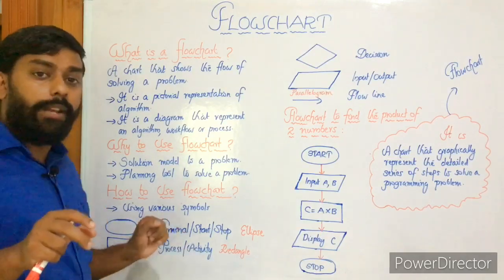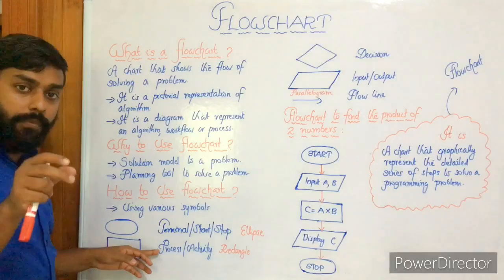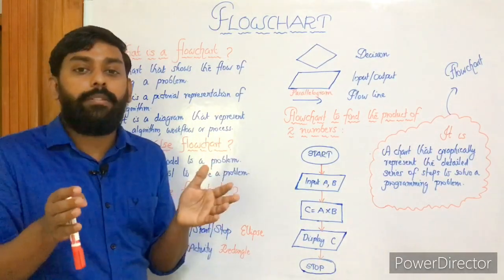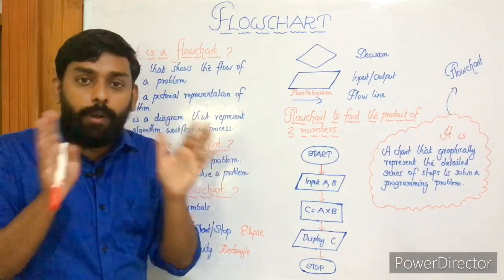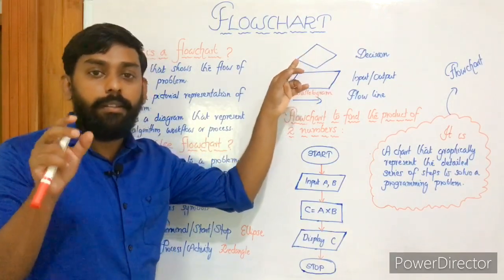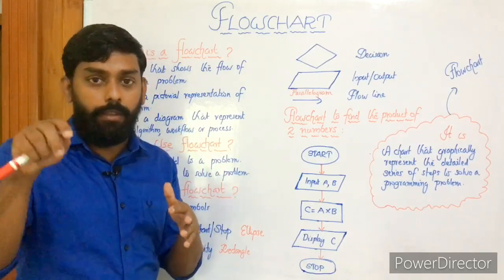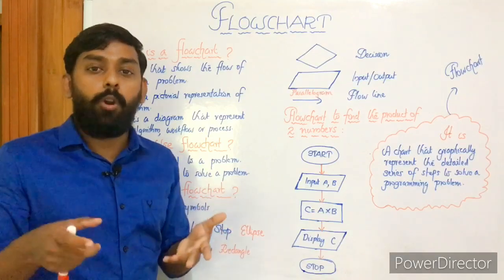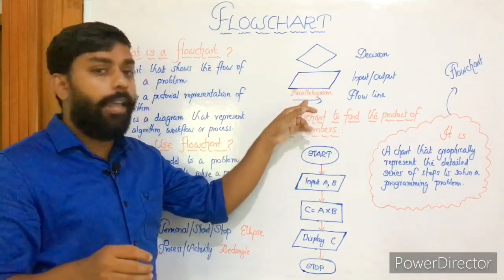Process or activity represents operations like adding two numbers — C equals A plus B — or multiplying two numbers — C equals A into B. Next is the decision symbol, which is a diamond shape. It represents decisions or conditions like 'if A greater than B.' Next is the parallelogram symbol, which is used to represent input or output. In algorithm we have seen 'input A, B' and 'display C' — both input and output use this parallelogram symbol.